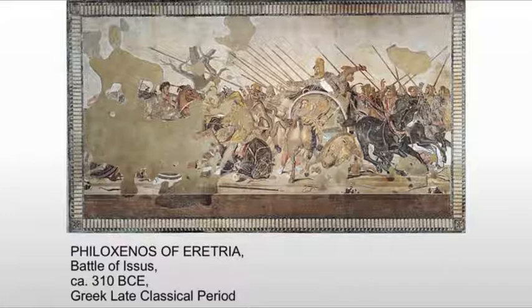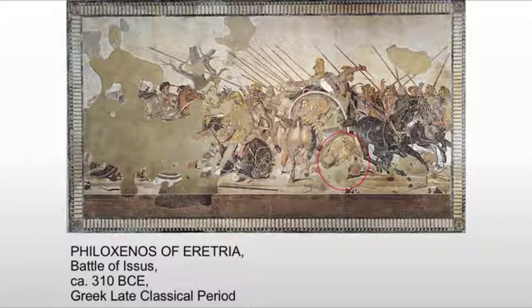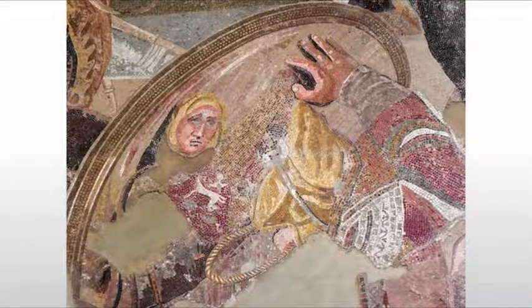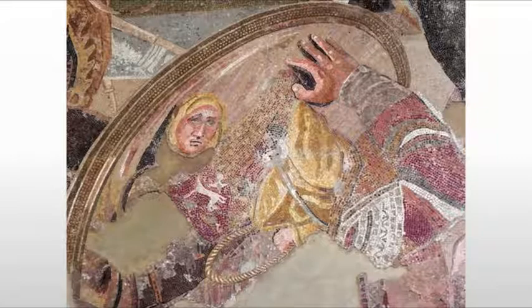We'll also see the figures interacting with this barren space, where they're existing within it. Another interesting element is this figure here — a dying warrior who is actually facing away from us. What we're seeing is a face, a reflection, in his shield, which is really remarkable because that takes a lot of planning to figure out that you're going to see this man's reflection in the shield, smaller and distorted, because the shield is going to be round.